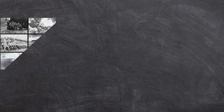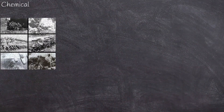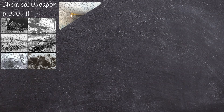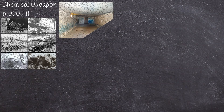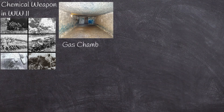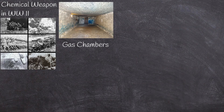Chemical weapons can be used in war or personal attacks. For example, millions of innocent civilians were killed by the German Nazis with Zyklon B gas, hydrogen cyanide gas, during World War II.